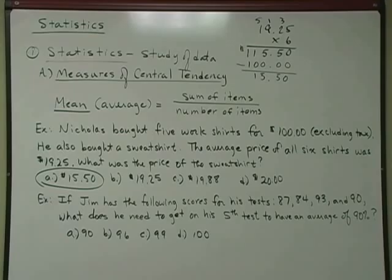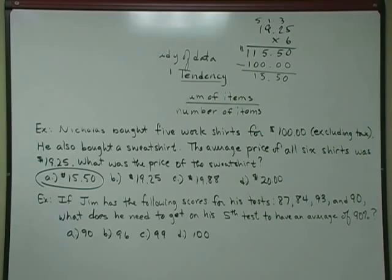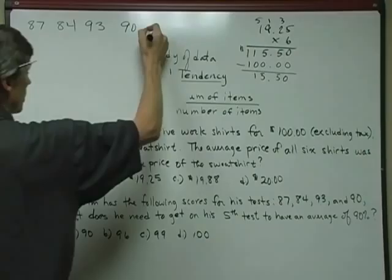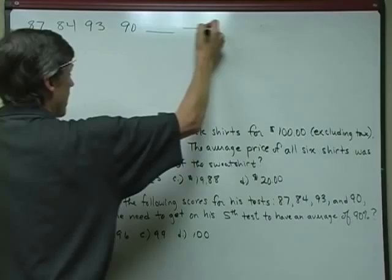Another problem that has to do with averages but has a little bit of a twist to it would be like this. It says that Jim has the following scores for his test, and his test scores are 87, 84, 93, and 90. What does he need to get on his fifth test to have an average of 90%? Well, what we're going to do here is there's a way to do this algebraically, and there's a little shorter way, and hopefully it will seem logical to you. I'm going to go ahead, clear out a little space right here, and I'm going to show you how I'm going to do this without a lot of algebra.